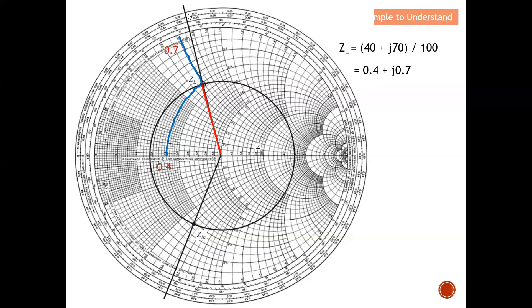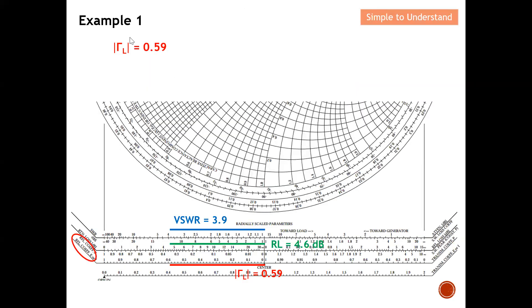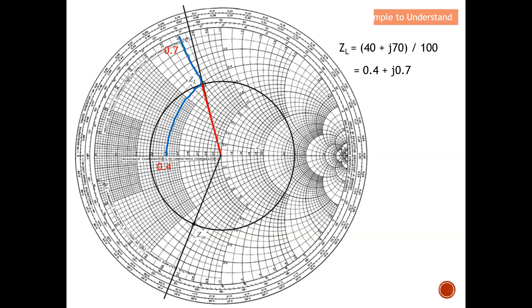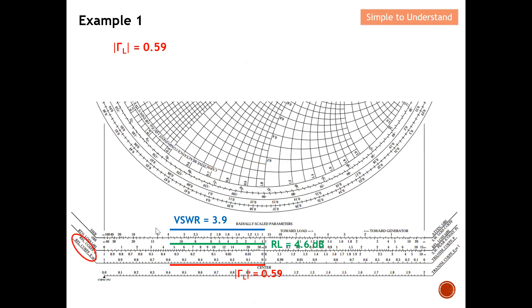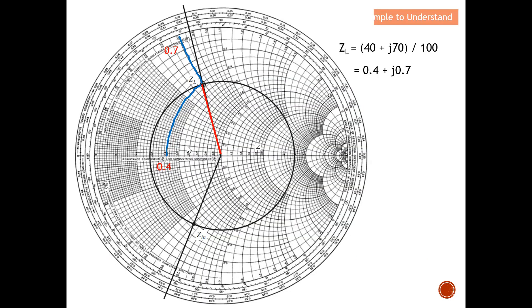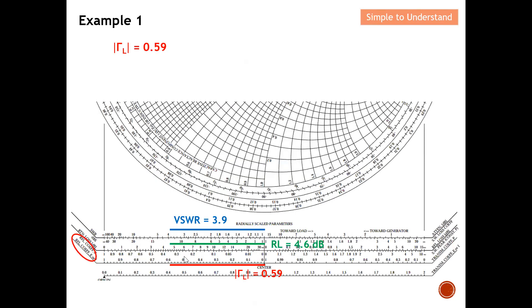I draw a straight line from the center of the Smith chart through the Z_L position. To read the reflection coefficient magnitude, I take this red line — drawn from the center to Z_L — and place it horizontally against the scale legend on the Smith chart. This gives a reflection coefficient at the load of approximately 0.59.